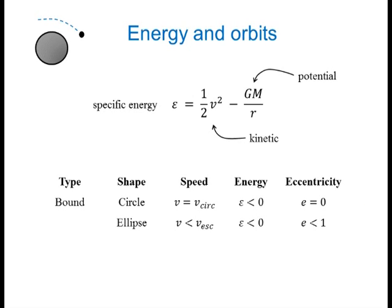Orbits come in different types. There are bound orbits: circular orbits and elliptical orbits. In a circular orbit, the speed is the circular orbit speed. In an elliptical orbit, you can't say exactly what the speed is — all you know is that it's less than the escape speed. For each of these orbits, the specific energy is less than zero.